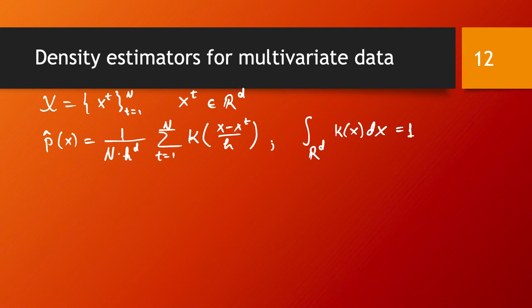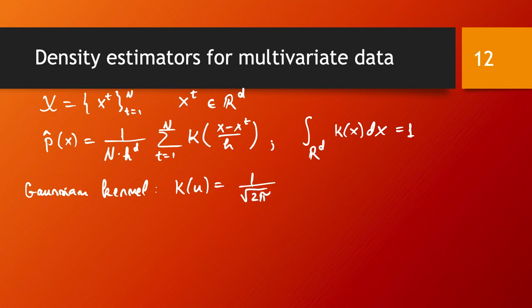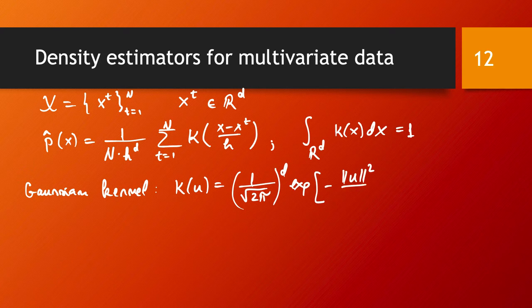And there are several different options how to go about this. One option is similar to the one we had in the one-dimensional case, the multivariate Gaussian kernel. And in this case its form is k of u is 1 over square root of 2 pi to power d exponent of minus the norm of u squared over 2.